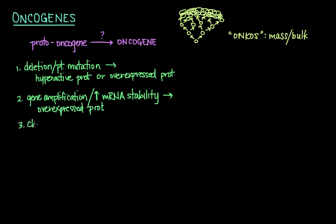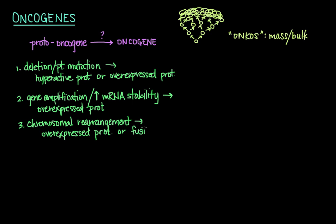Chromosomal rearrangement involves translocation of a gene to a nearby regulatory sequence that causes the normal gene product to be overexpressed, or possibly fusion to an actively transcribed gene which overexpresses the fusion protein or leads to a hyperactive fusion protein. The key theme emerging here is that you either have a normal protein that is overexpressed — basically too much of the normal protein — or normal expression but with a hyperactive protein.